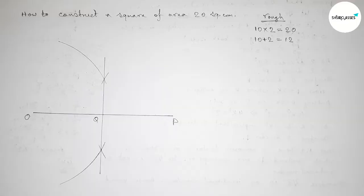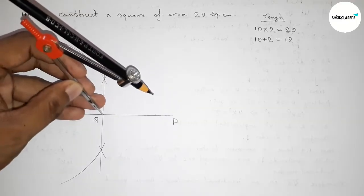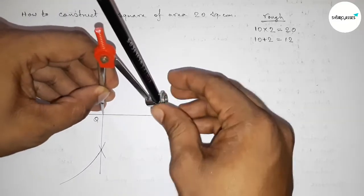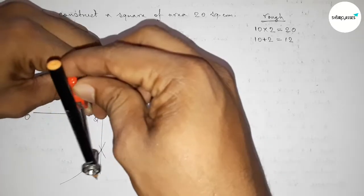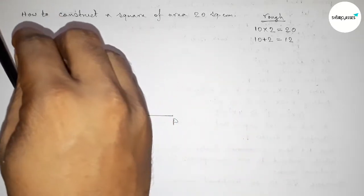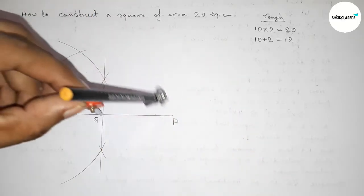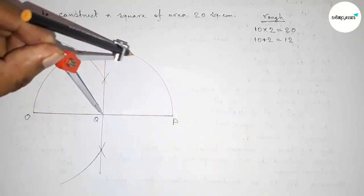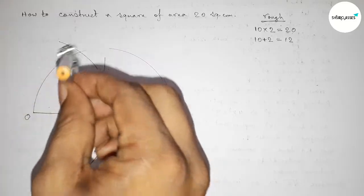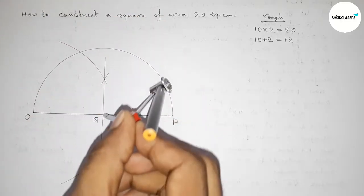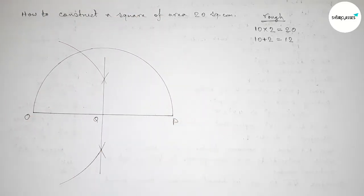Now we have to take QP and OQ to draw a semicircle through the points O and P.